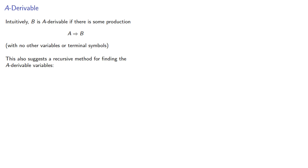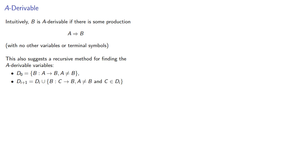This also suggests a recursive method for finding the A derivable variables. We'll start with an initial set, which is all the unit productions of A, and then form a larger set which includes all those plus all the unit productions from those variables. We'll repeat until we get the same set as before.